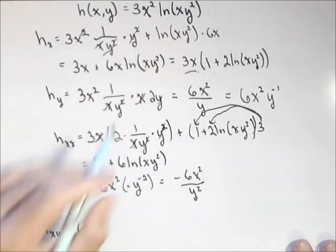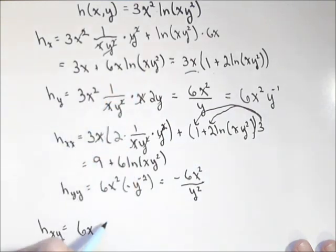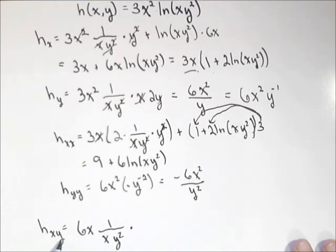So the six x is just a constant. Then I have the one over xy squared times the derivative of xy squared. You gotta pay attention to which function we're doing it with. We're doing it with respect to y. So that, remember, was x, because it's a constant, times the derivative of y squared, which is two y.